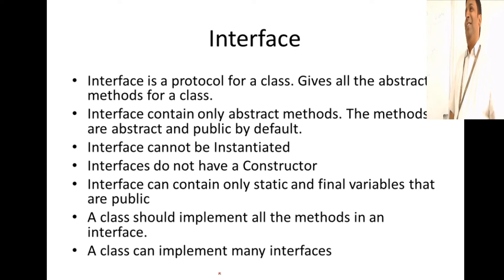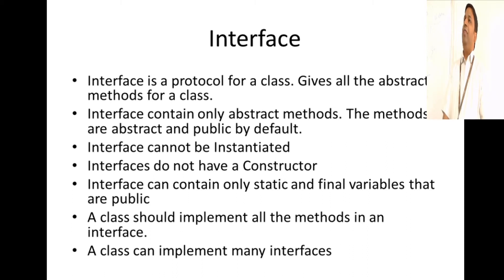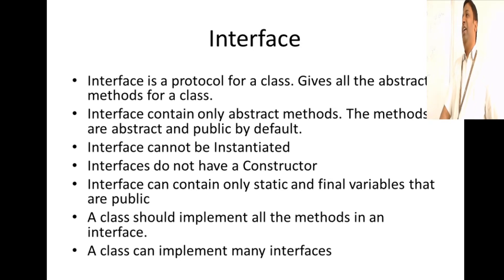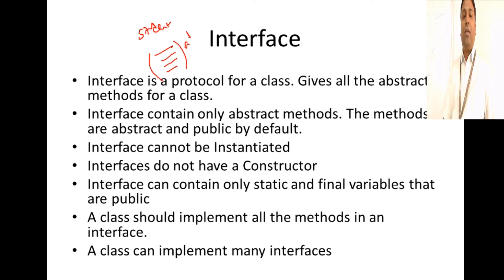Now let's talk about interfaces. The definition for an interface is that all the methods in an interface are abstract methods — though there is an exception using the default keyword, which we won't cover here. An interface is a protocol for a class. For instance, you can have a student interface defining what methods a student can perform on the system. That becomes a set of abstract methods — in an interface, all the methods are bound to be abstract.